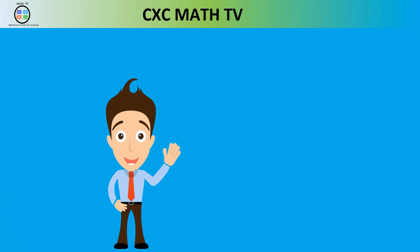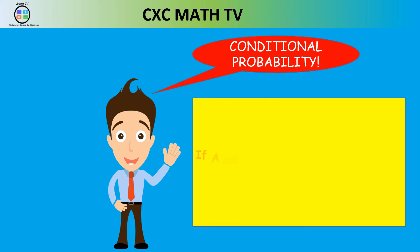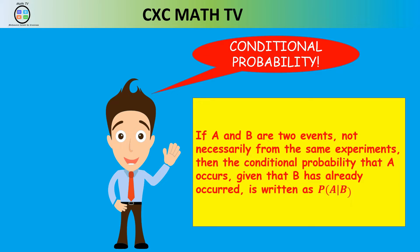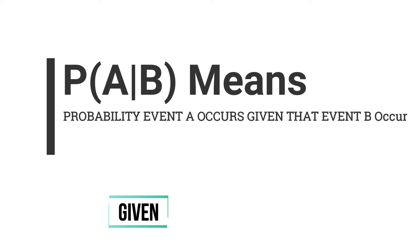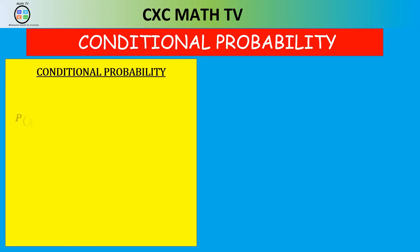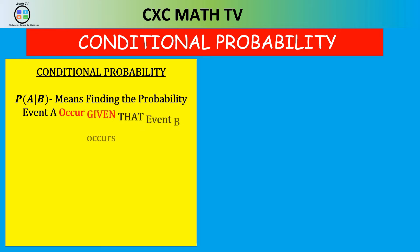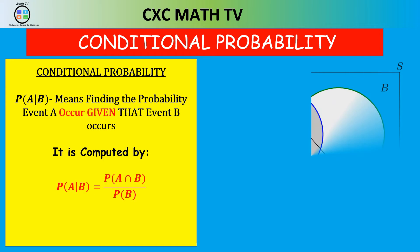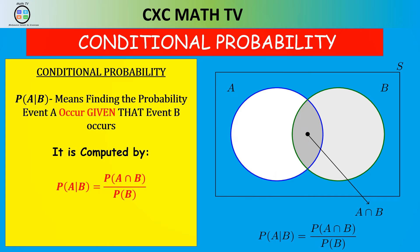Now if two events, A and B — they don't have to be from the same experiment — then the conditional probability that event A is going to occur, given that event B has already occurred, is written as P(A|B). That slash means 'given.' So P(A|B) means finding the probability event A occurred, given that event B already occurred. The formula is P(A|B) = P(A∩B) / P(B). We're simply finding the likelihood of an event occurring given that a previous event has already occurred.